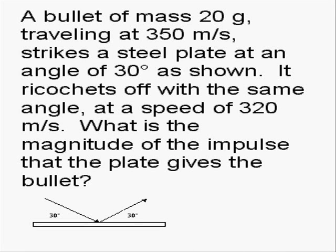Here's a problem that's on many tests in physics: a bullet of mass 20 grams traveling at 350 meters per second strikes a steel plate at an angle of 30 degrees as shown, it ricochets off with the same angle and at a speed of 320 meters per second. What is the magnitude of the impulse that the plate gives the bullet?